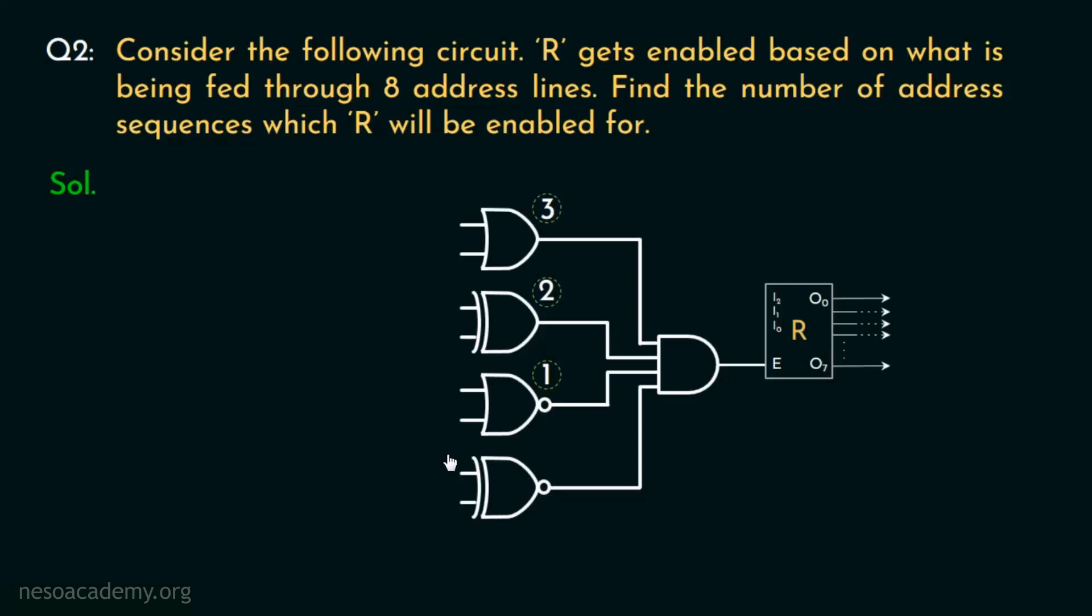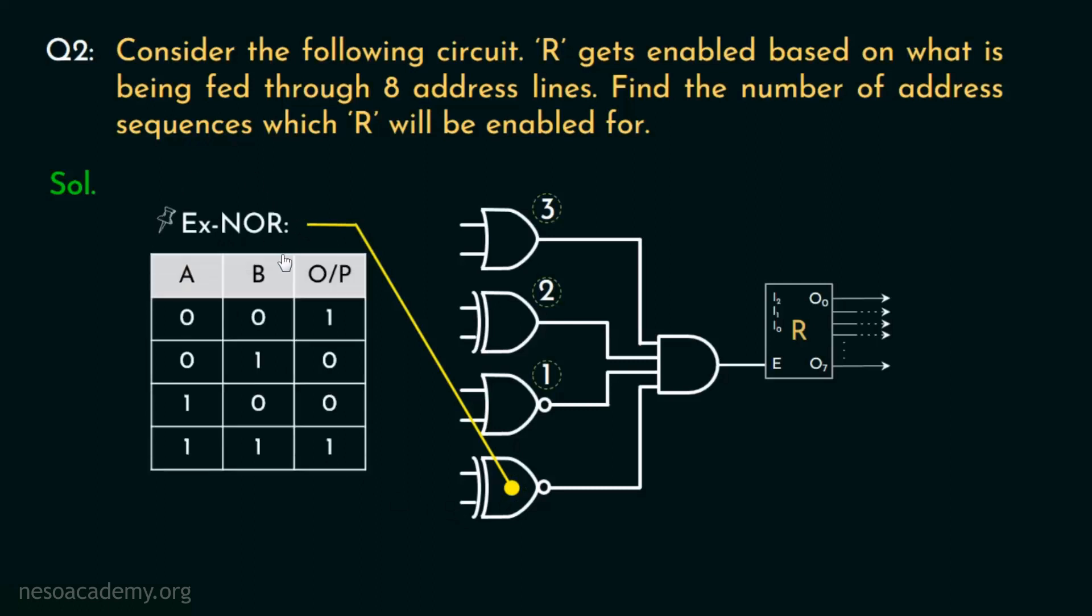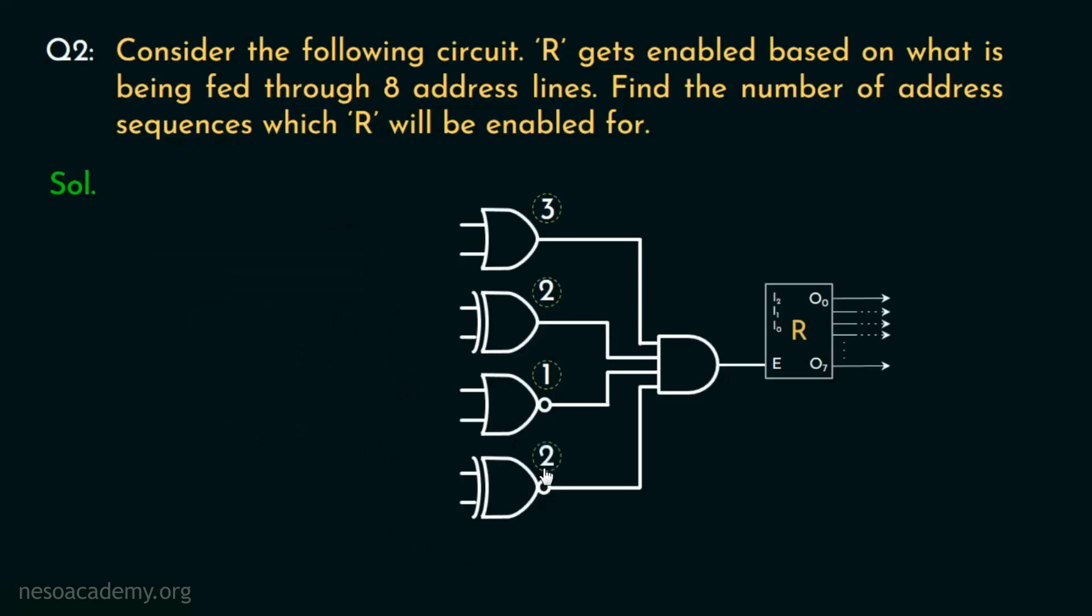Now consider the last 2 bits. These are given to a 2-input exclusive NOR gate. In case of XNOR, we know it produces 1 when the inputs are same. That is, for 0,0 and 1,1 input sequences, this gate will be activated. So for the address bits given to the XNOR gate, there are 2 more sequences.